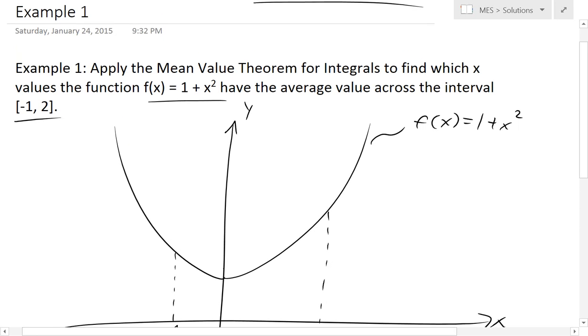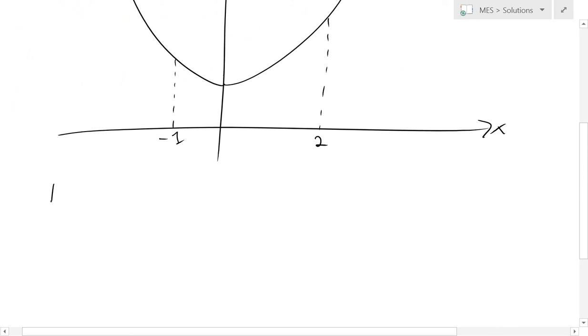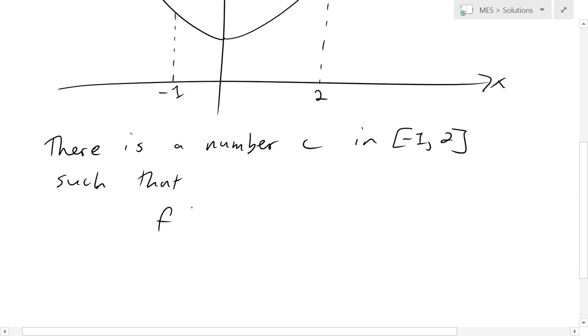So this is the endpoint, -1 to 2. The mean value theorem for integrals basically states that there is a number c in a and b. In this case, it's going to be -1 to 2, such that we have f(c) equal to the average value f_avg. And that equals to 1 divided by b - a of, now here, this is going to be the area of the curve from a to b.